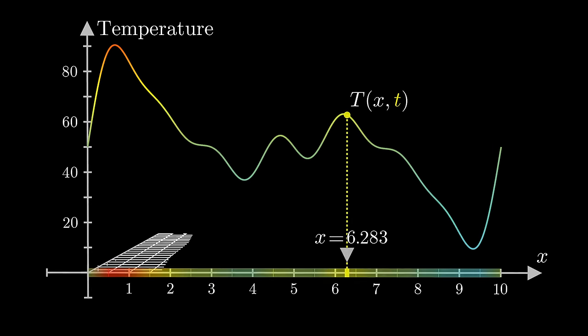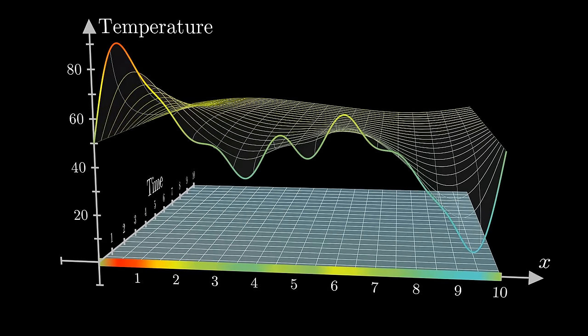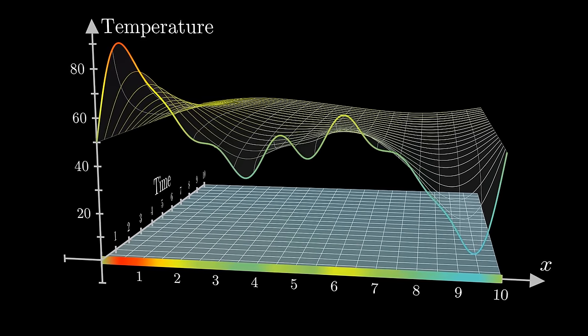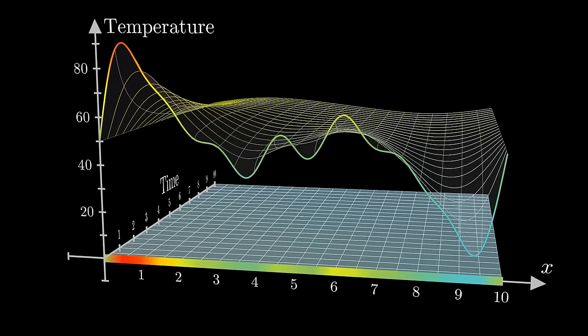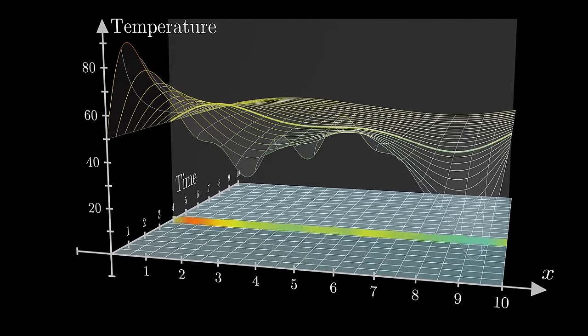You could, if you wanted, think of this input space as really being two-dimensional, representing space and time together, with the temperature being graphed as a surface above it, each slice across time, showing you what that distribution looks like at any given moment.